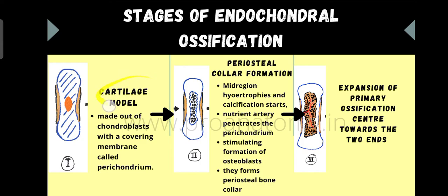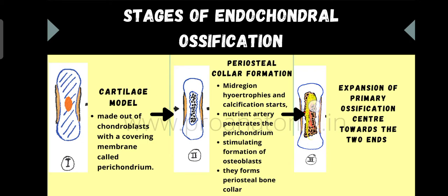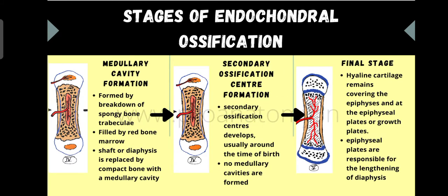Now in the third stage, the primary ossification center, which was placed in the mid-region, starts expanding towards both ends — enlarging within the diaphysis towards the two ends of the bone.